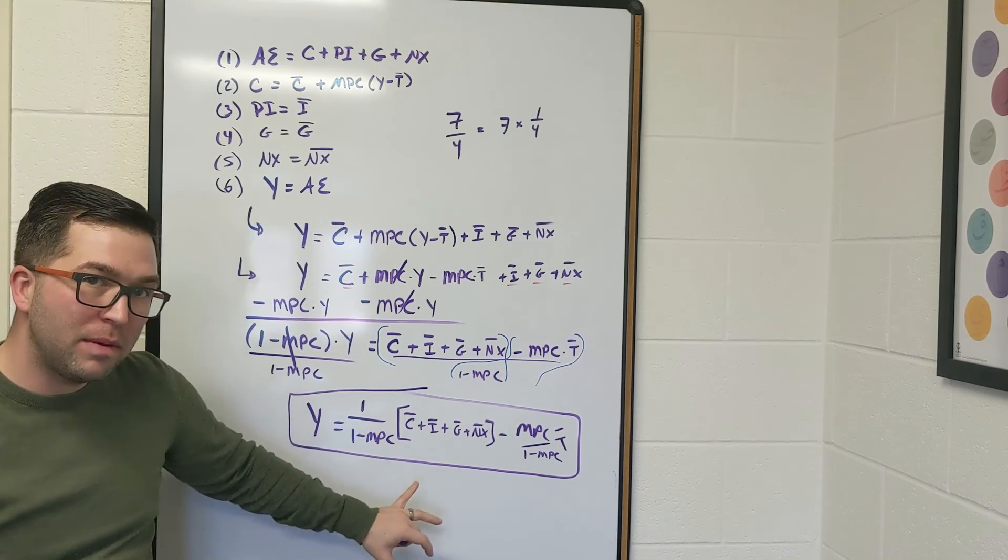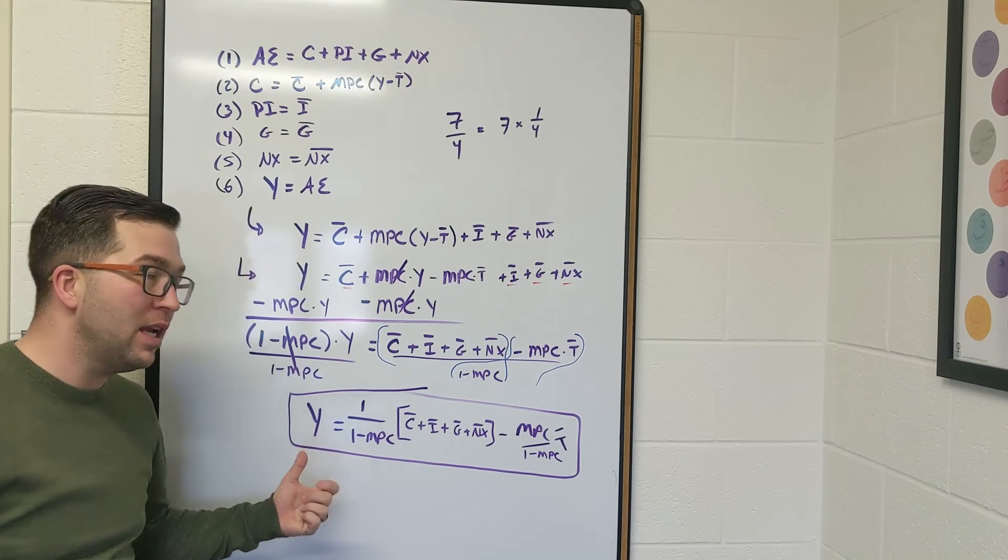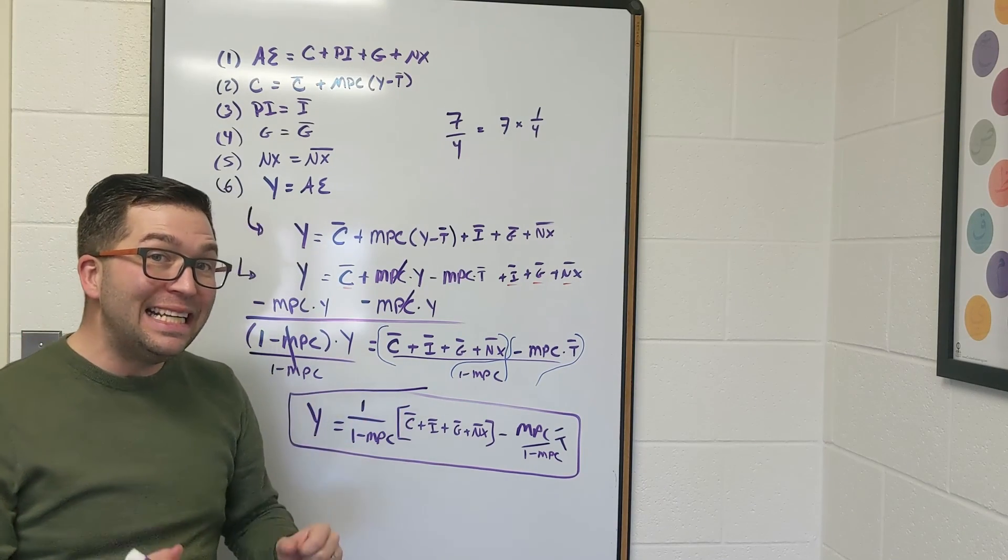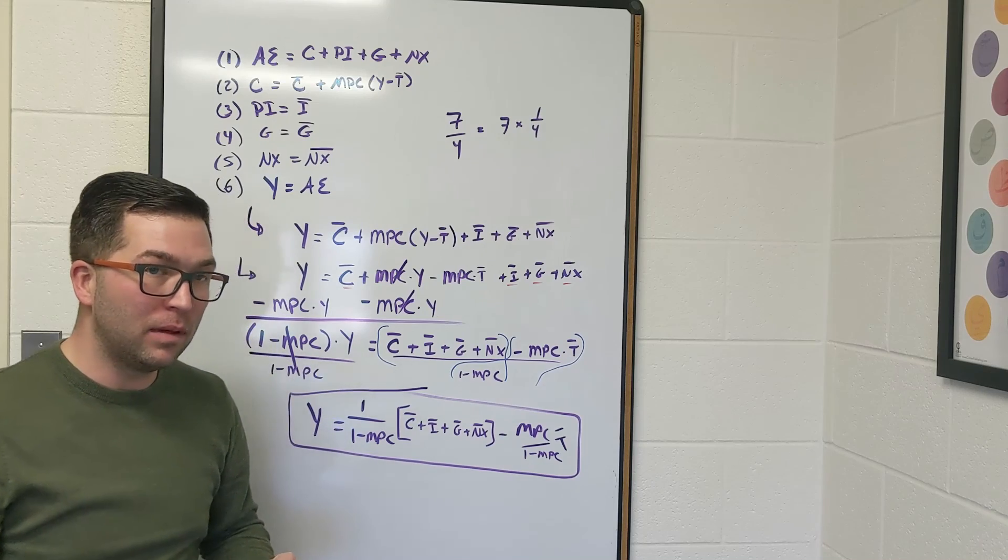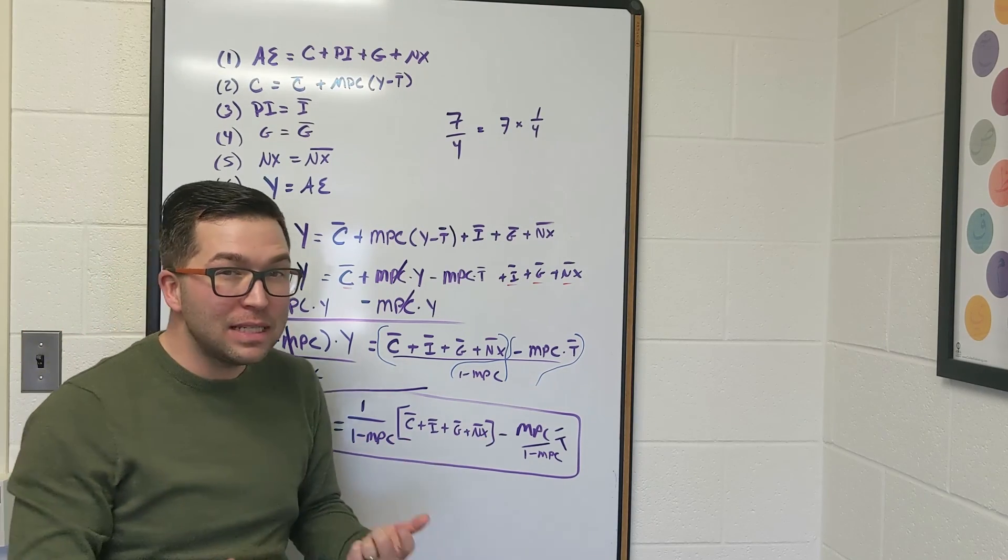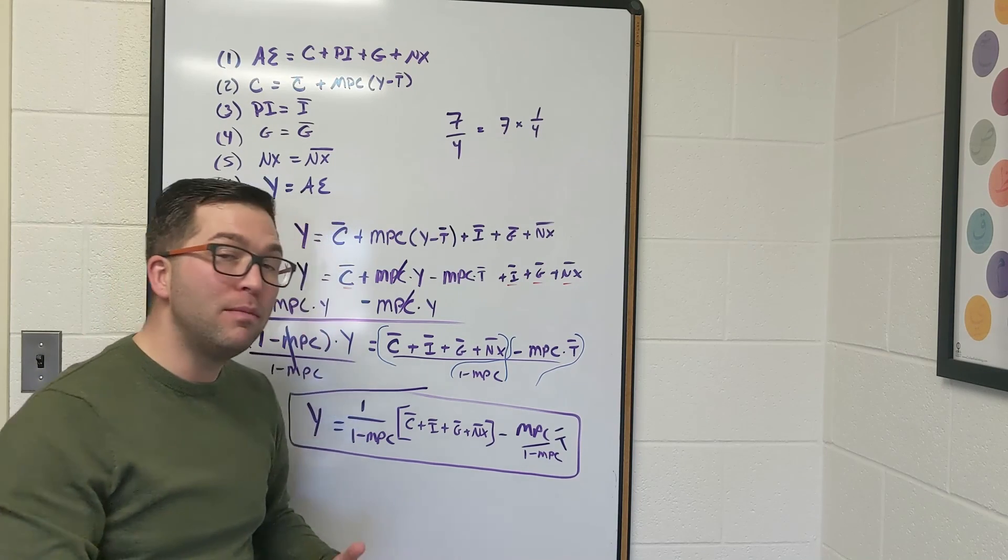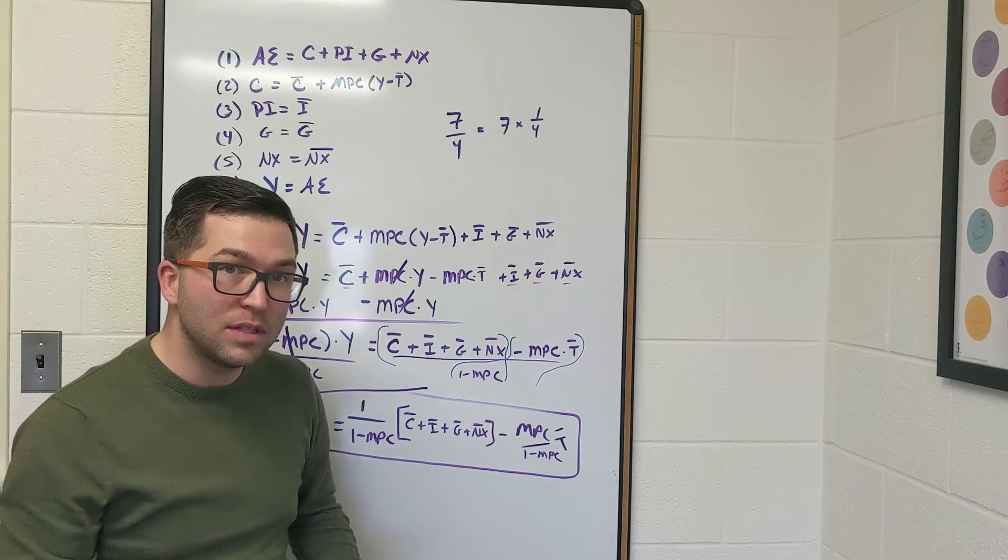This is going to be our equation that tells me what level of real GDP puts this aggregate expenditure model into macroeconomic equilibrium. We're going to explore these different parts and show how this can have very significant impacts to overall macroeconomic policy as we move forward throughout this course.